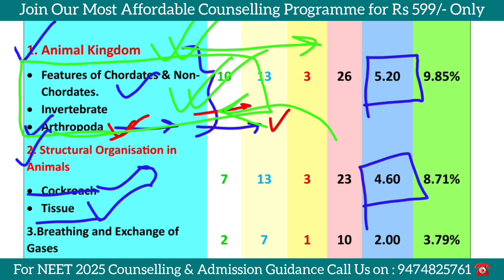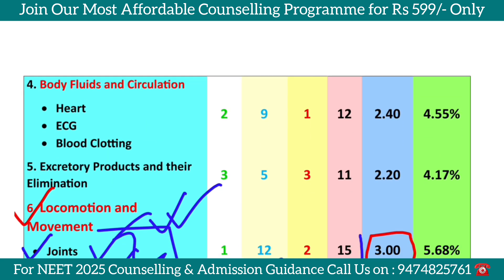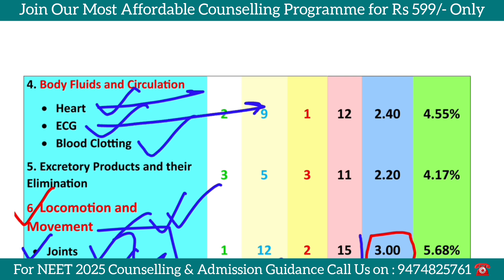Body Fluids and Circulation covers blood clotting, the heart and ECG. The heart means the human circulatory system. ECG is represented by the P, QRS, and T waves. Blood clotting factors are also covered, including various clotting factors.